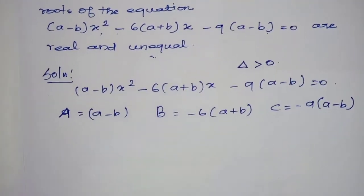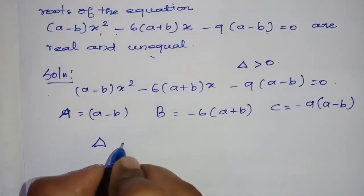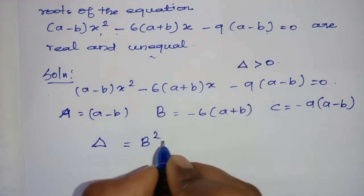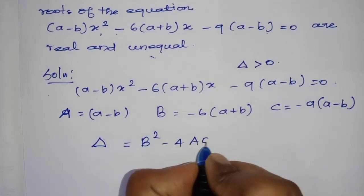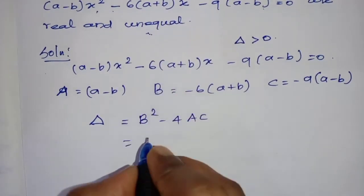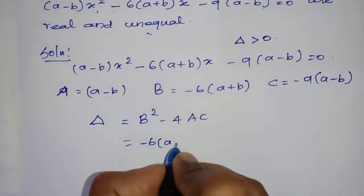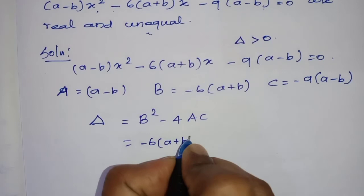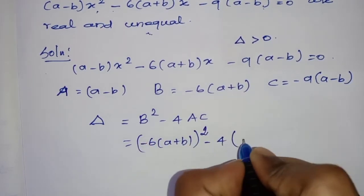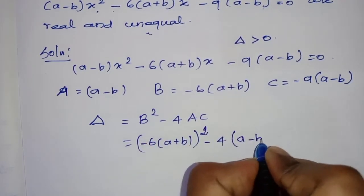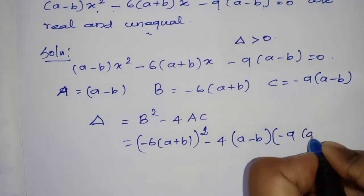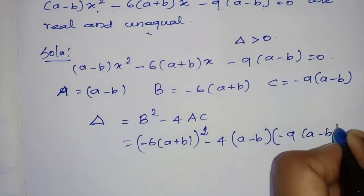Now if we find delta, delta = B squared minus 4AC. So first the B squared value: B = minus 6 into (a plus b), so B squared = minus 6 into (a plus b) the whole square, minus 4 into (a minus b) into minus 9 into (a minus b).